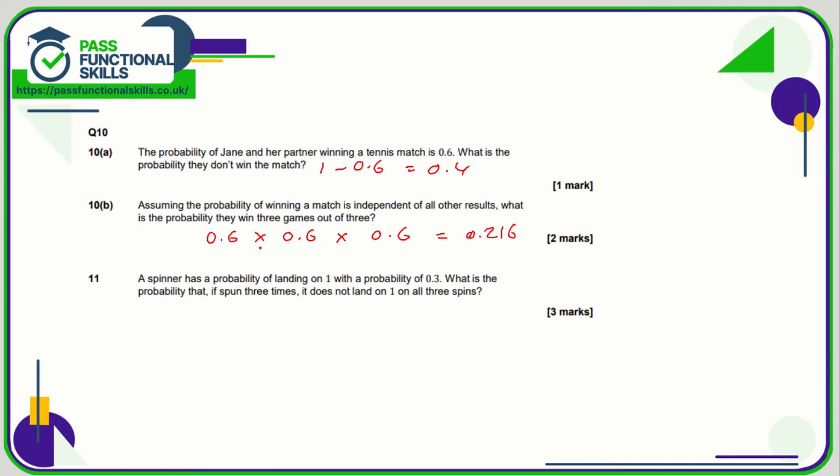Question 11: a spinner has a probability of landing on 1 with a probability of 0.3. So what is the probability that it does not land on 1 for three consecutive spins? So if it lands on 1 it's 0.3, so not 1 is going to be 0.7. And it's going to be 0.7 for the second spin and 0.7 for the third spin. Multiply these—0.7 three times—and you get 0.343.